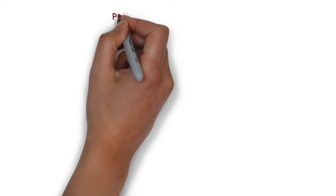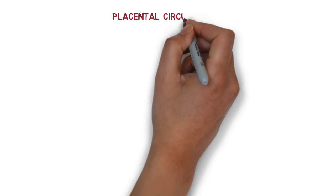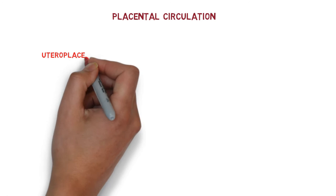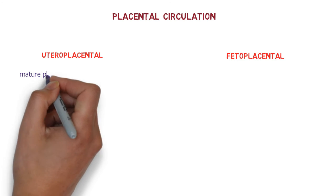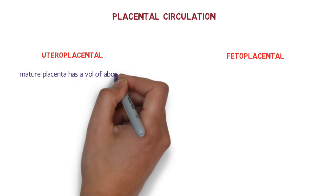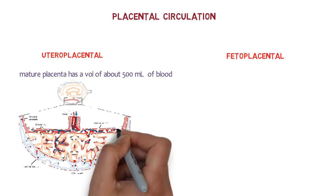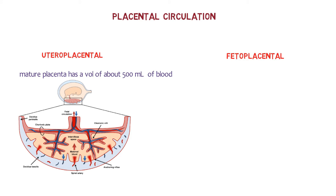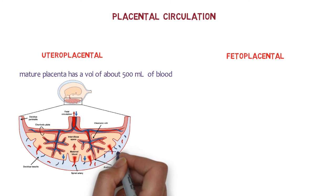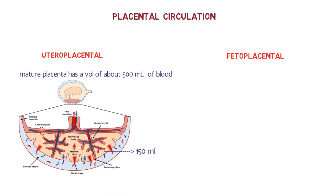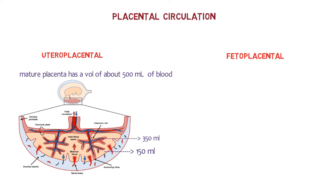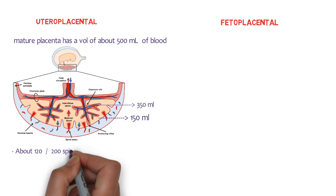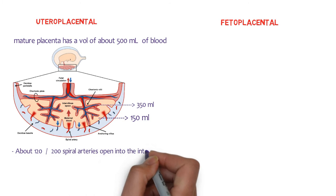Placental circulation consists of uteroplacental and fetoplacental circulation. The uteroplacental or maternal circulation: a mature placenta has a volume of about 500 ml of blood — 150 ml lying in the intervillous space and the remaining 350 ml occupied by the villi system. There are about 120 to 200 spiral arteries opening into the intervillous space.